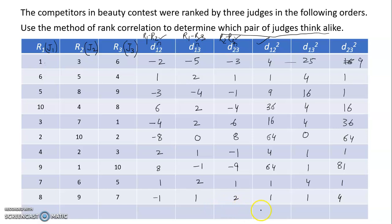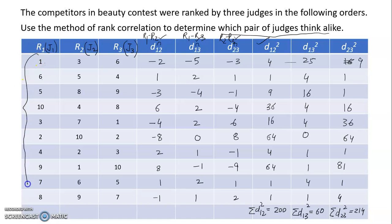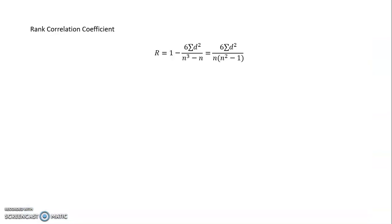Now taking the summations required for the formula: Σd12² = 200, Σd13² = 60, and Σd23² = 214. The number of contestants is n = 10. You can pause and verify these totals yourself. Let's carry these forward to apply Spearman's formula.